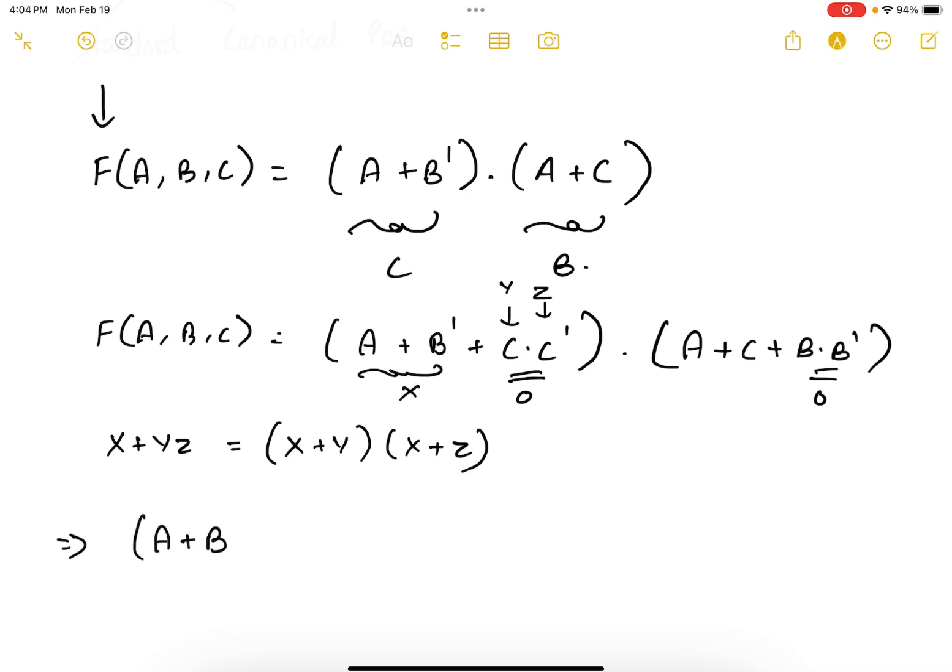a plus b prime plus c times a plus b prime plus c prime times. Similarly, assuming this is x, this is y, and this is z, we can write that as a plus b plus c times a plus b prime plus c. We can see that we have a common term here, this one and this one, so we can ignore this term.